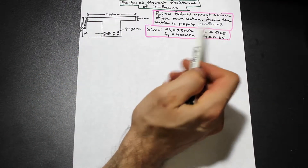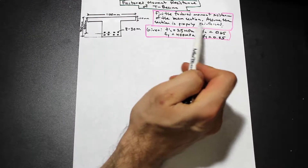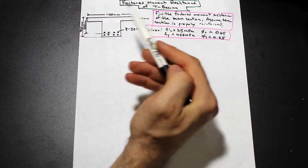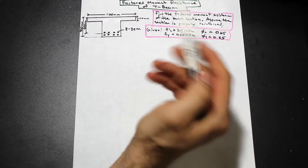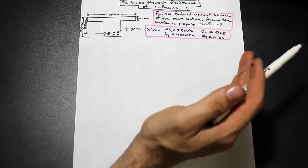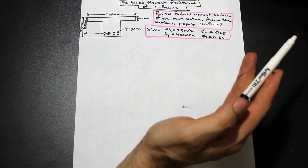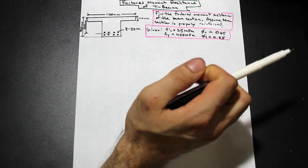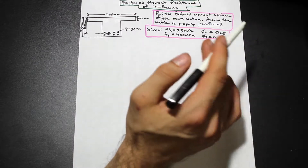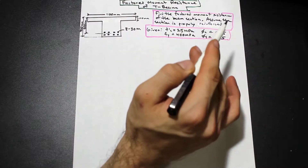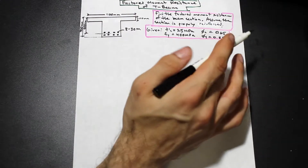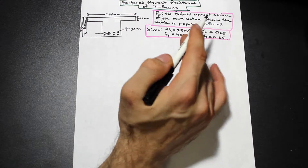We're asked to find the factored moment resistance of the beam section. Assume the section is properly reinforced — as we know from the other videos, that means the steel has yielded. So we can make a couple of different assumptions based on this; we don't need to find the strain in the steel, which makes the question easier.